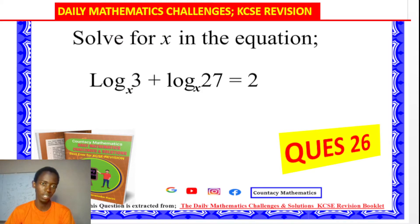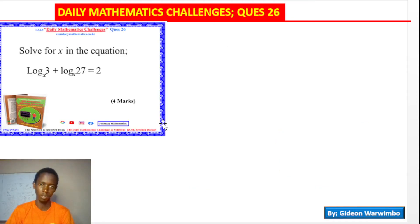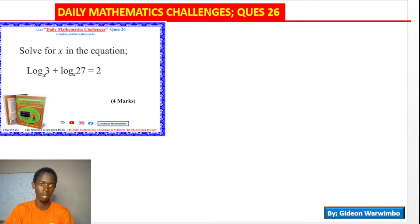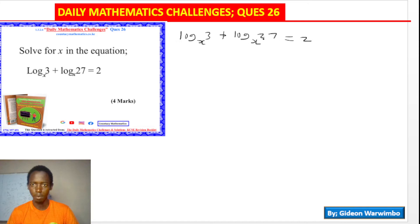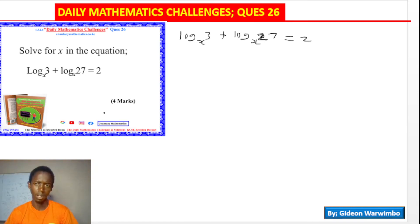You can attempt the question first, then come back and watch the solution. The good thing is to always make sure that as you watch, you are noting something down, so it is good to follow along with a pen and a piece of paper and possibly a calculator. The question is log base x of 3 plus log base x of 27 equals 2, and we just need to find the value of x.